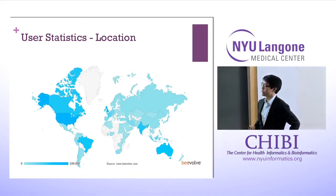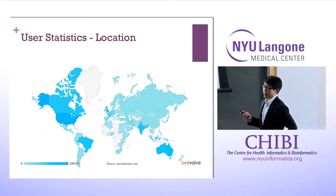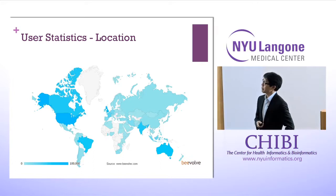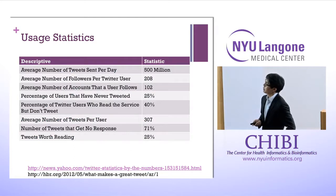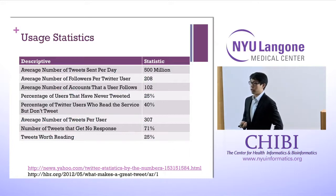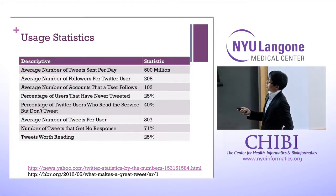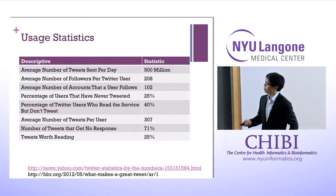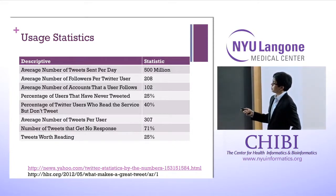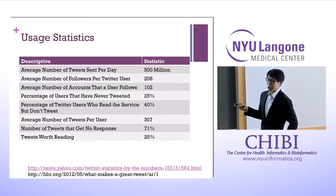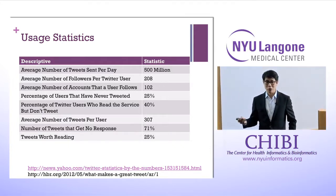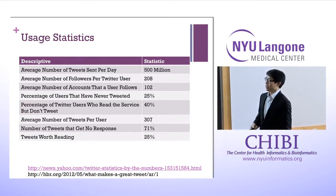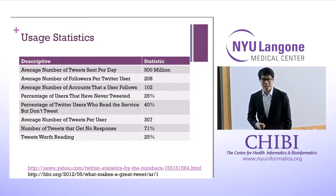What about the tweets themselves? The average number of tweets sent per day is 500 million. The average number of followers per user is 208, and the average number of accounts a user follows is 102. About 25% of Twitter users have never tweeted at all — they just follow people and read. The average number of tweets per user is 307. About 71% of tweets get no response, and a Harvard Business Review study found only 25% of tweets are actually worth reading.